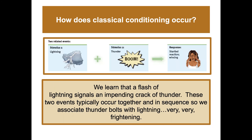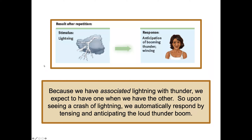Here's an example of how classical conditioning occurs: we learn that a flash of lightning signals an impending crack of thunder. These two events typically occur together in sequence, so we associate thunderbolts with lightning and get scared, especially when younger — and dogs often get really scared of thunder too. Because we've associated lightning with thunder, we expect one when we see the other.